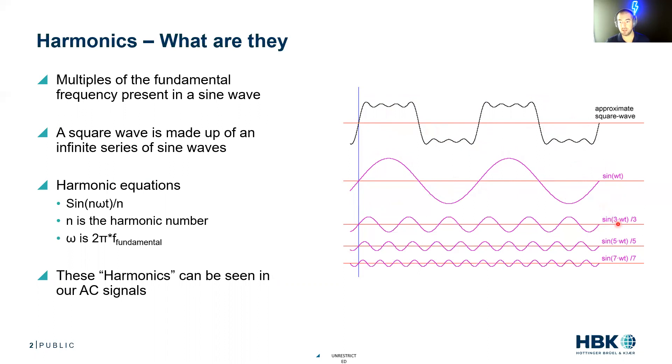The third harmonic is sine(3ωt), so we have three times the frequency and we can see one, two, three peaks per fundamental, over three. The amplitude is going to be thirded. The fifth harmonic is sin(5ωt)/5, sin(7ωt)/7.